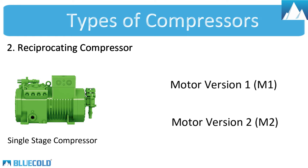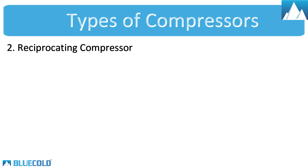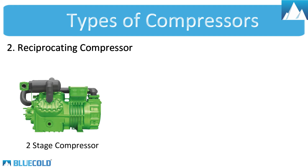Motor Version 2 — in technical sheets, it is denoted as M2. These models have smaller motors as compared to M1. It can be used only for negative temperature applications if you are charging R404A refrigerant in it. For R134A refrigerant, it can be used in both positive and negative temperatures.